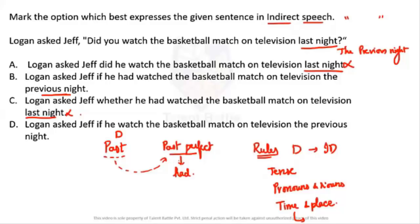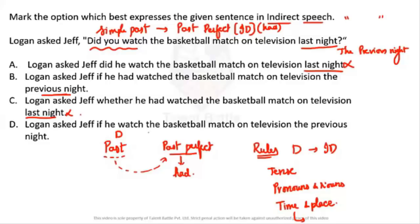So option A is eliminated for not having 'had,' and also for not having 'the previous night.' Option C is eliminated for not having 'the previous night.' Option D is eliminated for not having 'had.' The only option that has both 'had' and 'the previous night' is option B. That's how we can answer without reading all the sentences.